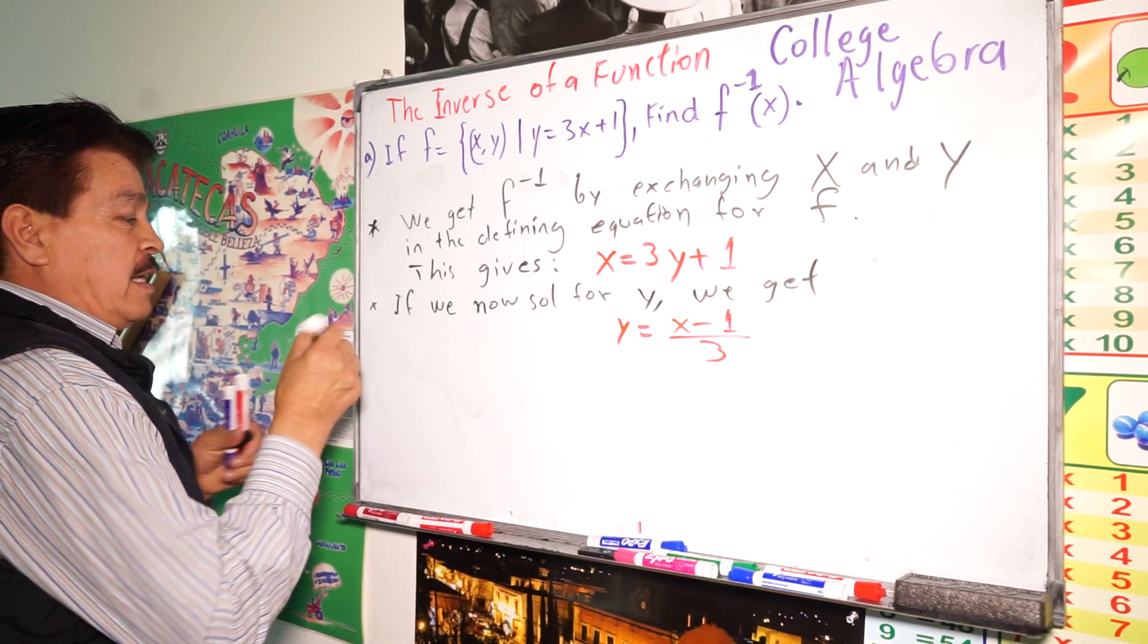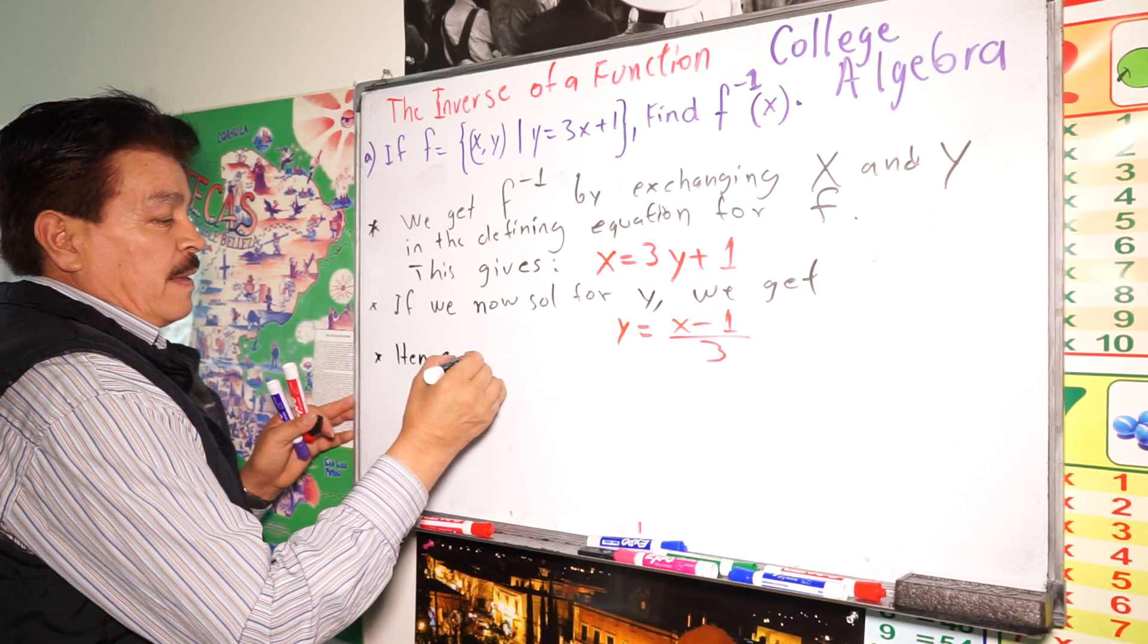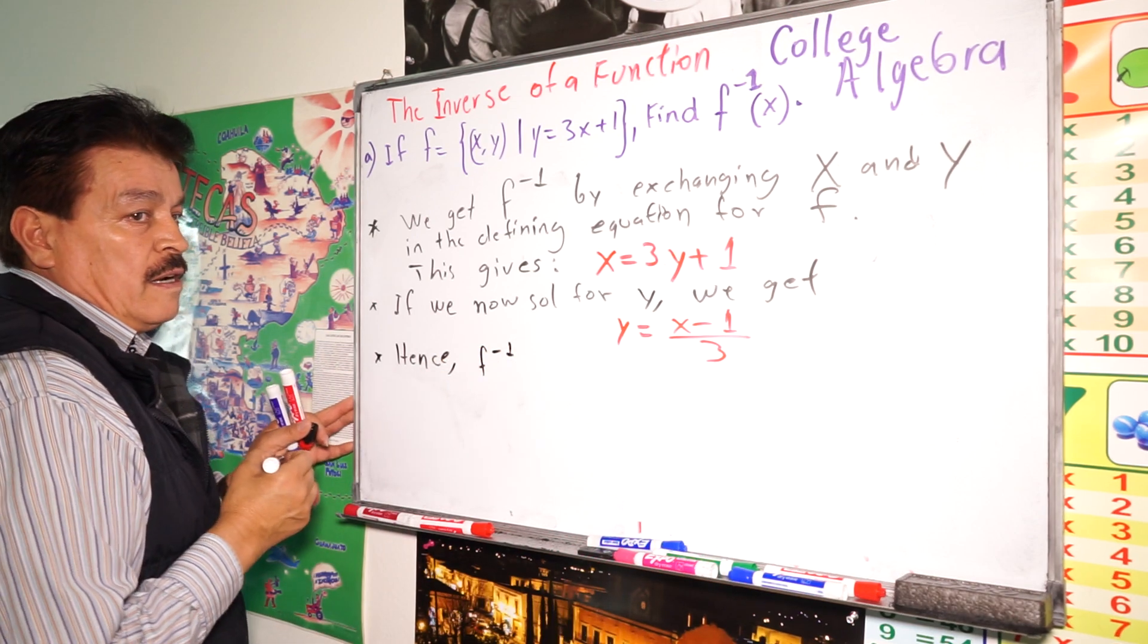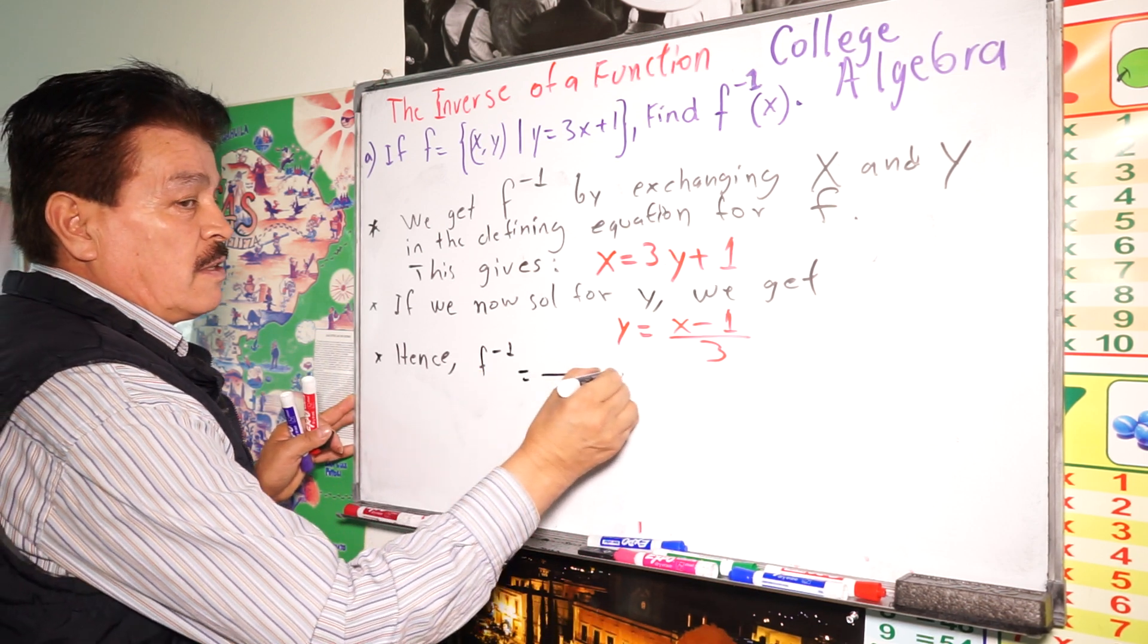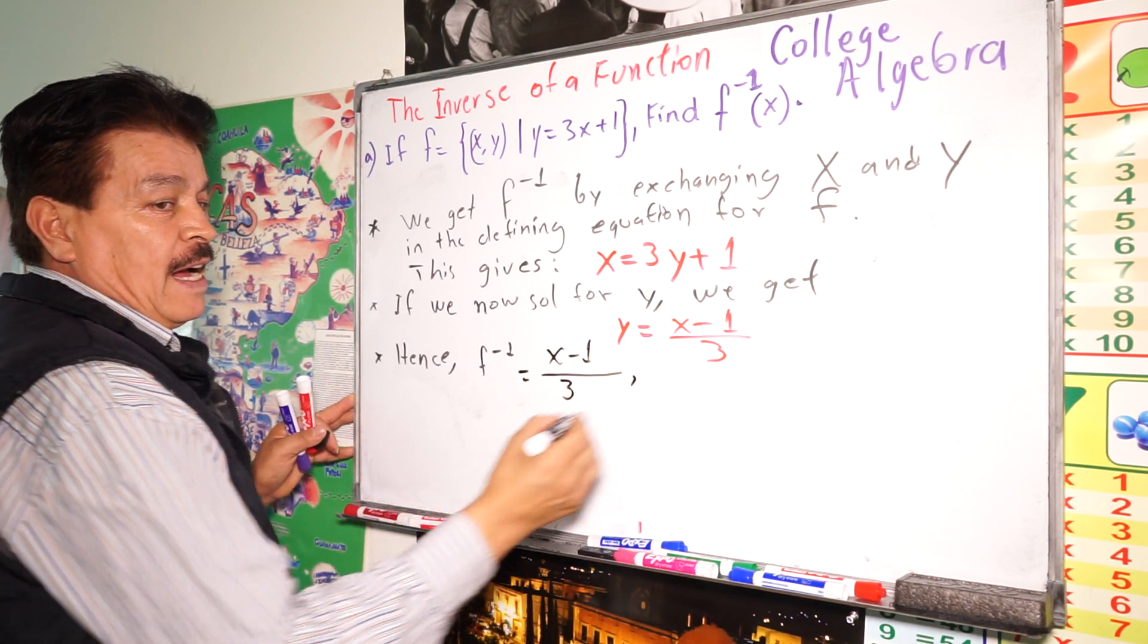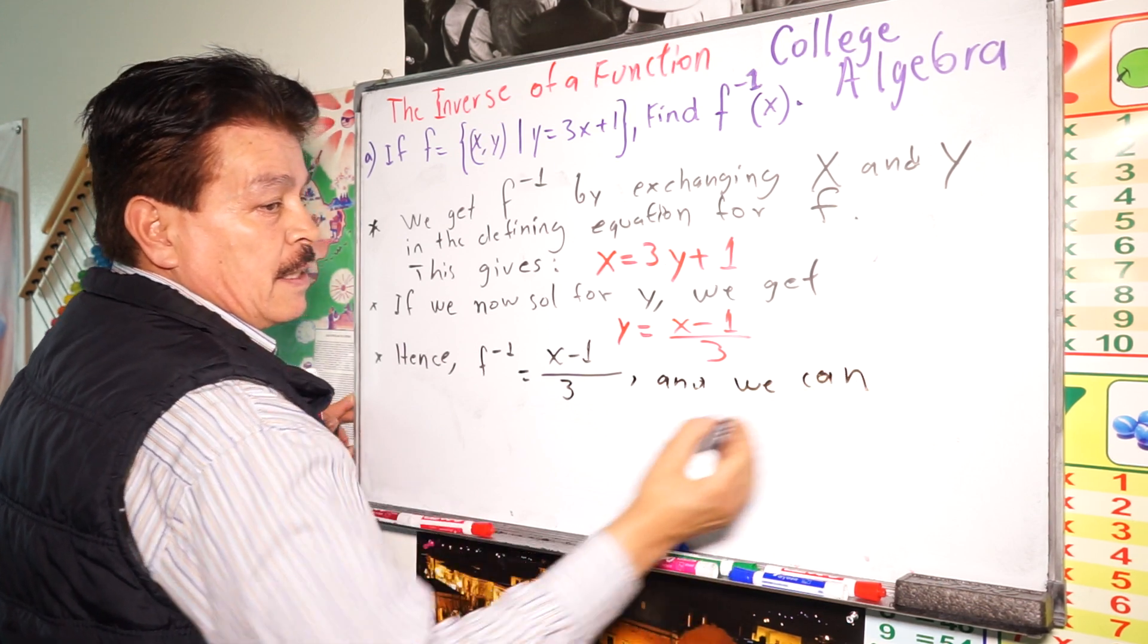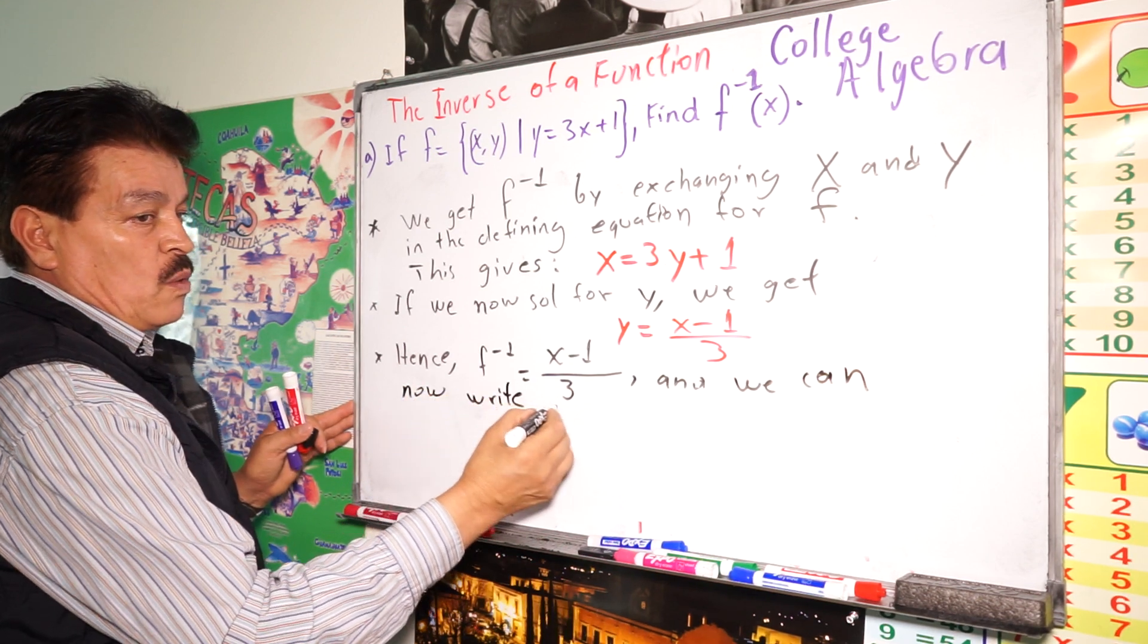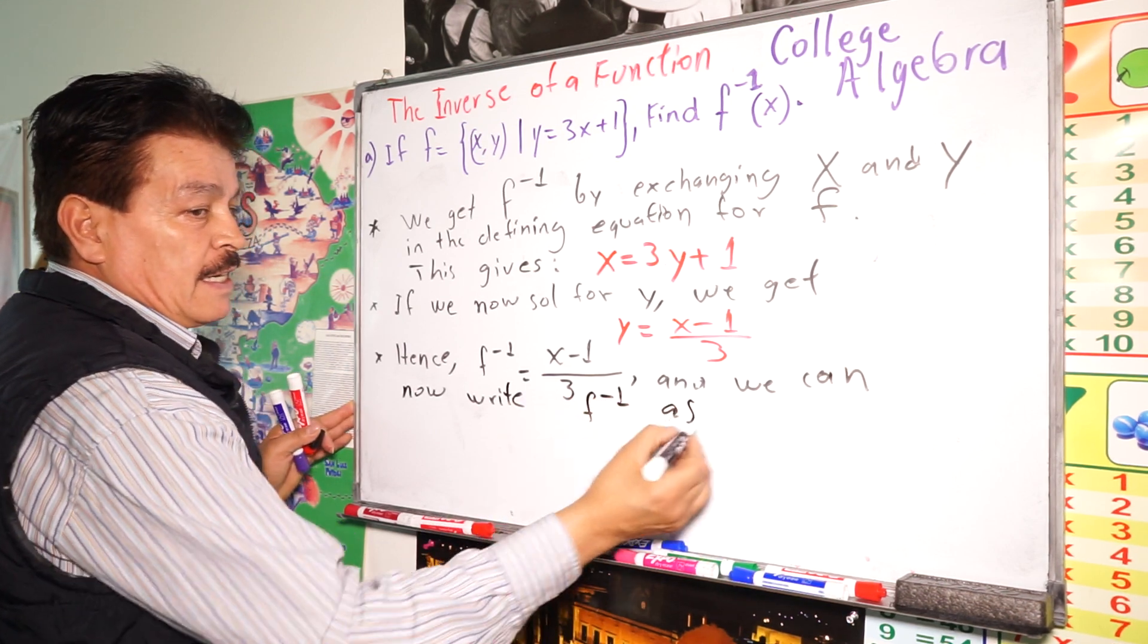So, next step here. Then f inverse equals x minus 1 divided by 3. And we can now write inverse f as like this.